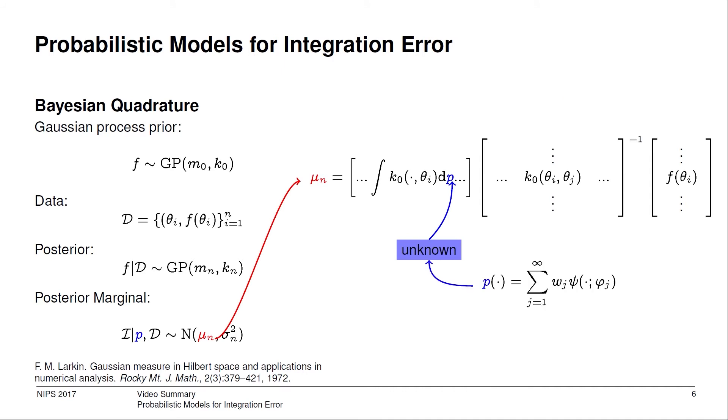Now going back to Bayesian quadrature, let's replace p with this characterization. Commuting the sum and the integral, we see that Bayesian quadrature can proceed provided that the boxed integral has a nice closed form. Fortunately, this is the case for several pairs k naught and psi, which is why I said Dirichlet process mixture models were natural.